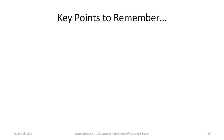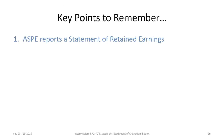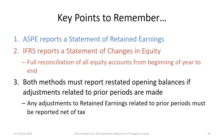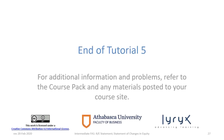To recap the key points: ASPE reports a statement of retained earnings, while IFRS reports a statement of changes in equity, with the difference being that IFRS requires a full reconciliation of all equity accounts from beginning to end of year. Both methods must report restated opening balances if there are any prior-period adjustments, and those adjustments are made to retained earnings and reported net of tax. This concludes Tutorial 5. We hope you found it useful.